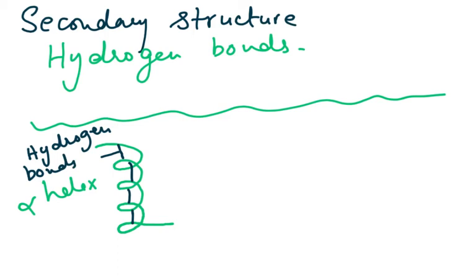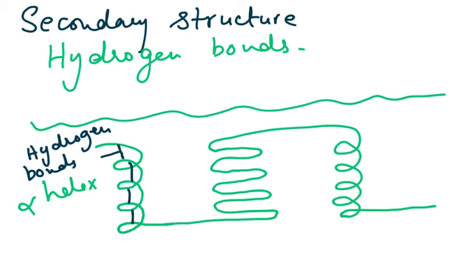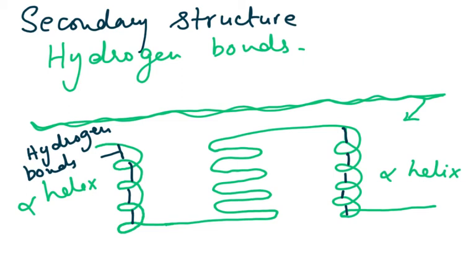The hydrogen bonds form a spiral shape — the alpha helix. The same polypeptide chain can fold into alpha helices at multiple places, or none at all. There can also be hydrogen bonds that form a different shape — this particular folded shape is called the beta pleated sheet.